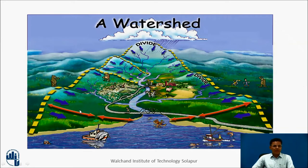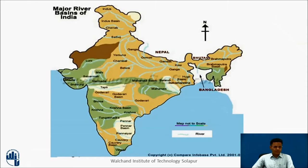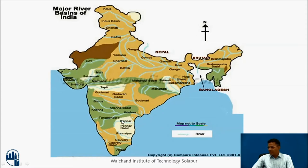This is a typical watershed. You will find that in this watershed, this is a ridge line. Depending upon the geography and the mountains, India is divided into a number of river basins: the Ganga River Basin, the Narmada River Basin, the Mahanadi River Basin, the Godavari River Basin, the Krishna River Basin, the Pennar River Basin, the Kaveri River Basin, the Vaigai River Basin, and the Brahmaputra River Basin.